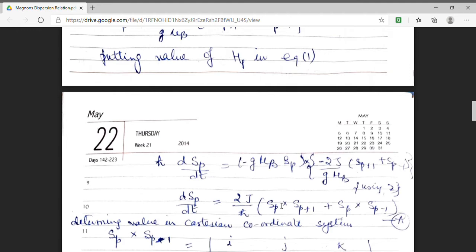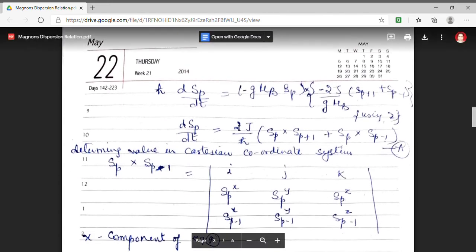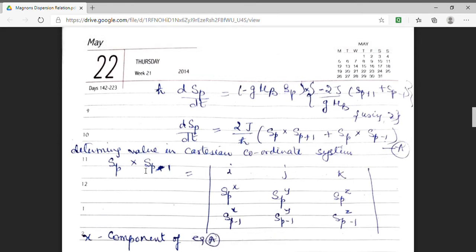In order to solve this differential equation, I am determining the value of cartesian coordinates separately. So, in order to find out the components, I am first of all finding the value of cross product of two spins.